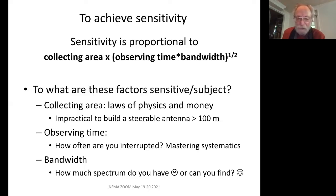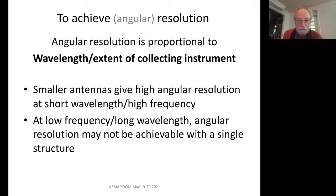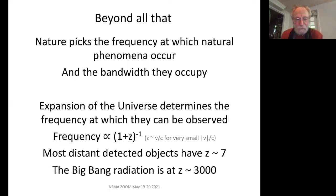This is one of the differences between what I do and what most of you do. I have to admit that I don't always observe within my allocations, for reasons I'll explain. For angular resolution, the angular resolution is a ratio: the wavelength divided by how big your collecting instrument is. At low frequency and long wavelength, if you want to achieve high angular resolution, you may need more size than a single structure can give you. Beyond all that, we're dealing with nature, and the phenomena that we observe occur at frequencies that nature chooses — the laws of physics.